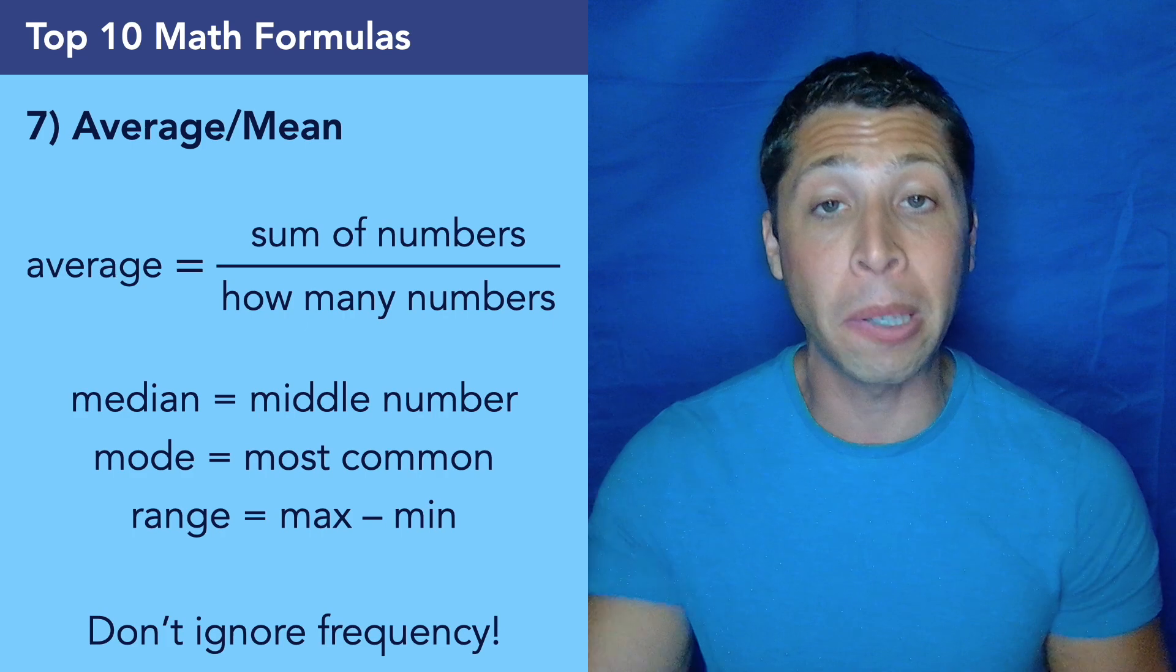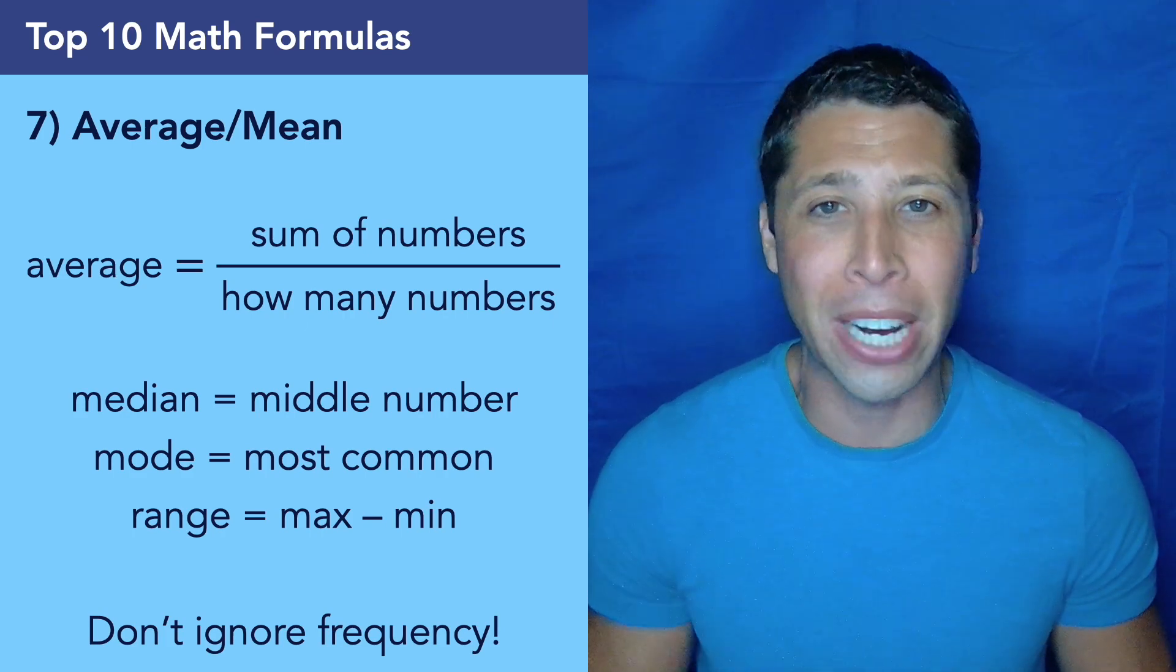Number 7, we need this for statistics, the average formula. We also need to memorize mean, median, mode, and range, they're definitely going to come up.